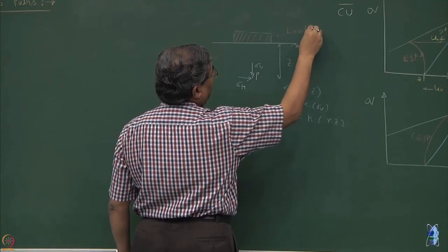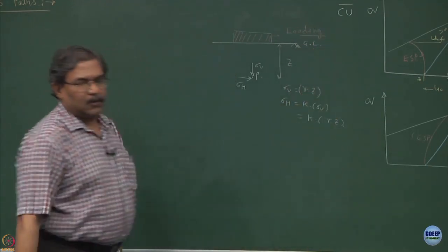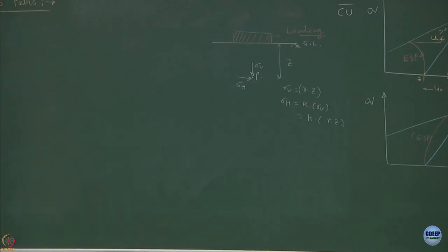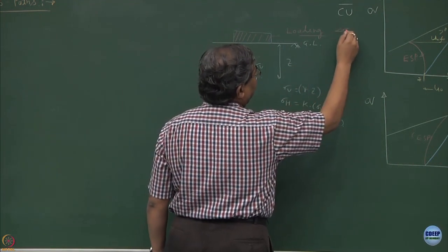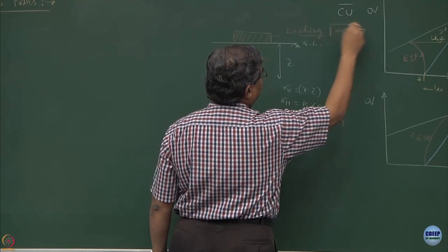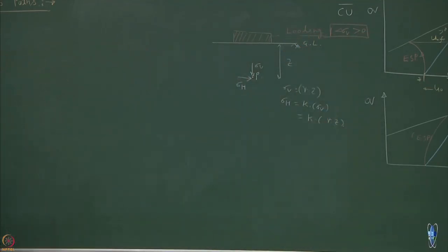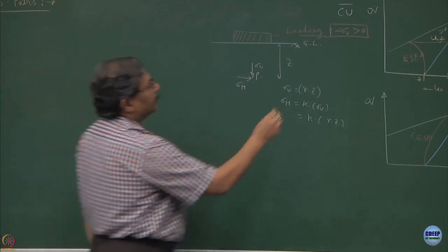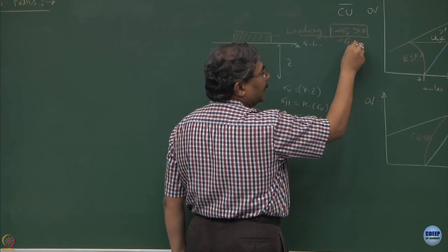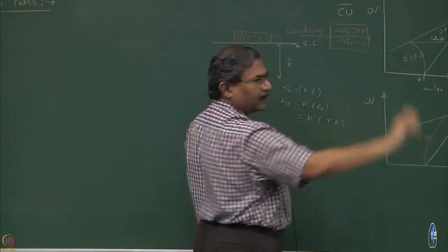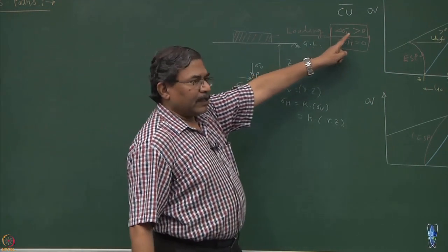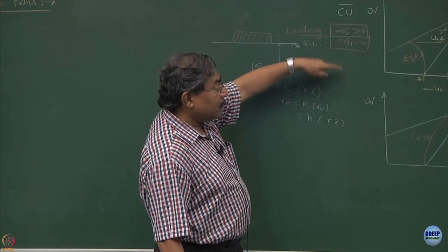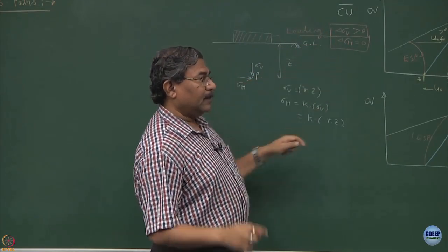That means if this is the activity of the construction - loading - what loading results in, first of all, is enhanced sigma v value. This indicates that delta sigma v is going to be positive, keeping sigma h constant. That means delta sigma h is equal to zero. When you are loading the soil mass from the top, confining stress remains same - what is going to change? Only the vertical stresses.